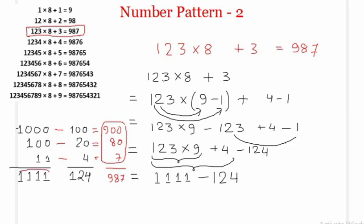So 1111 − 124 = 987, which is exactly what we expected — the right-hand side of the third row.